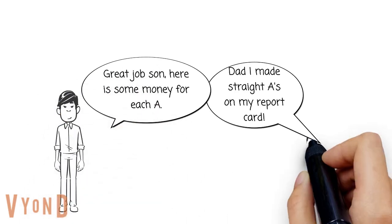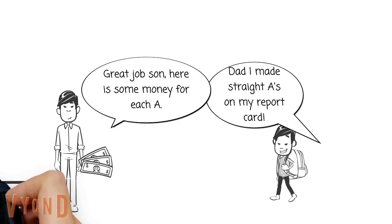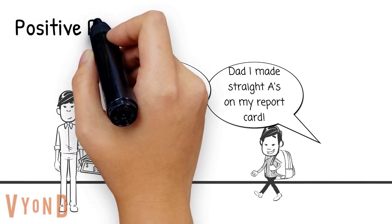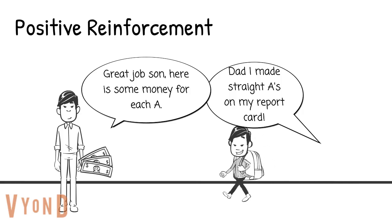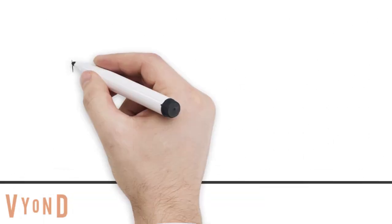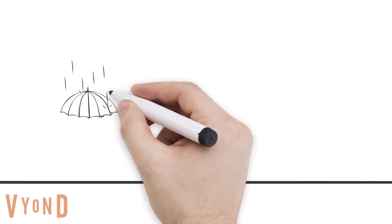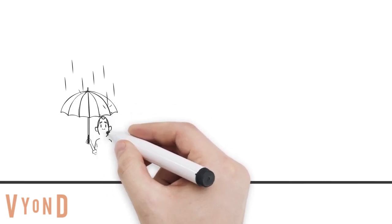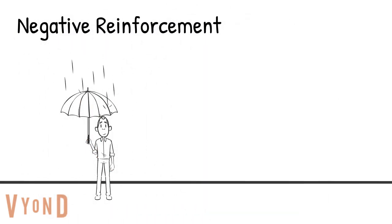In positive reinforcement, if a dad gives his son money for each A he makes, that kid is going to continue to work hard to make A's so he can earn that money — positive reinforcement, adding in a reward. Bringing your umbrella out when it's raining is an example of negative reinforcement. We all know that it's annoying to get rained on, so using your umbrella reduces the annoyingness of getting rained on, so you continue to use it when it rains. That's an example of negative reinforcement.